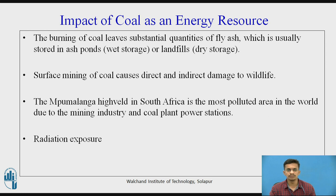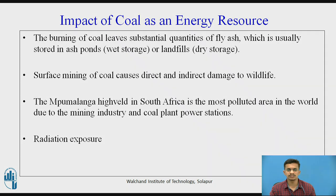The burning of coal leaves a substantial quantity of fly ash, which is usually stored in ash ponds (wet store) or landfills (dry store), which contaminates the groundwater. The surface mining of coal causes direct and indirect damage to wildlife. The Mpumalanga Highveld in South Africa is the most polluted area in the world due to the mining industry and coal power plant stations. Coal also contains radioactive elements like uranium, which on burning causes radiation.